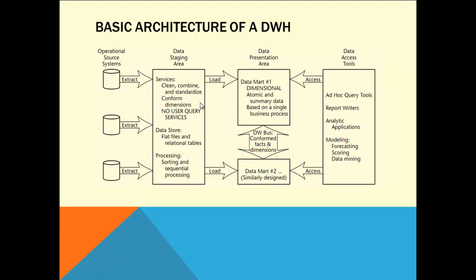In the data presentation area, data mart 1 is dimensional — atomic and summary data based on a single business process. This is for one business, which could be only HR. The second data mart is for sales. The third data mart could be for operations or production.